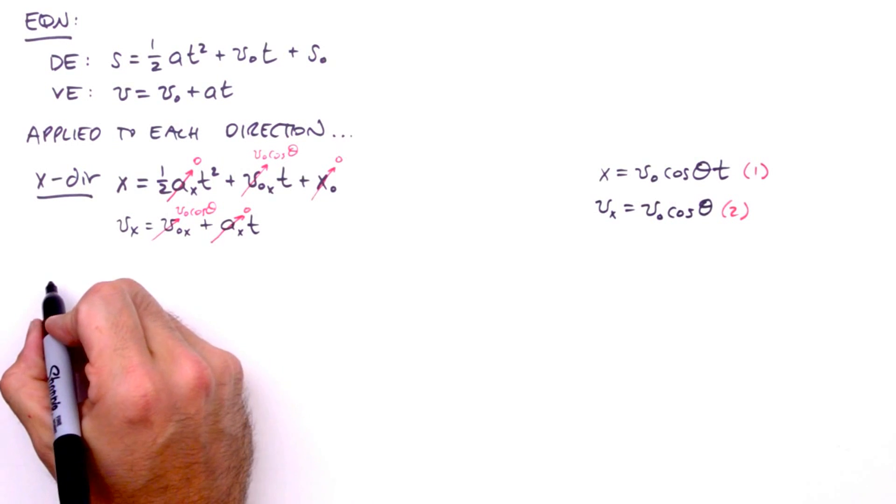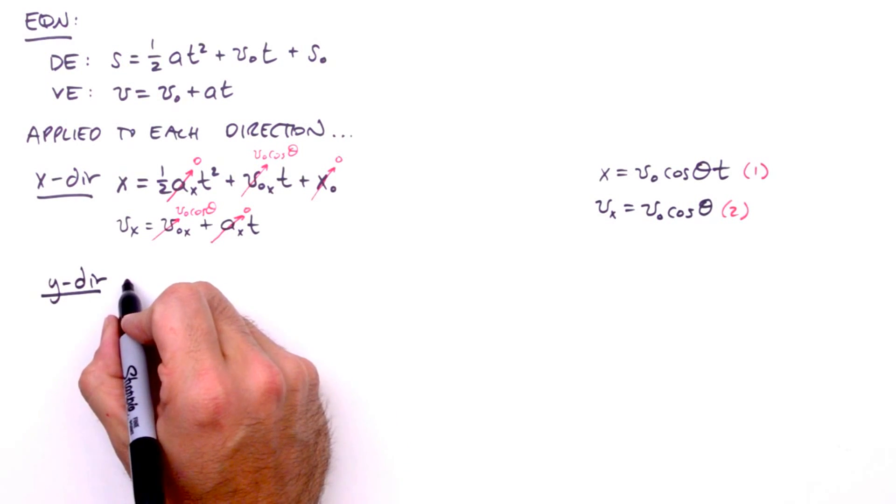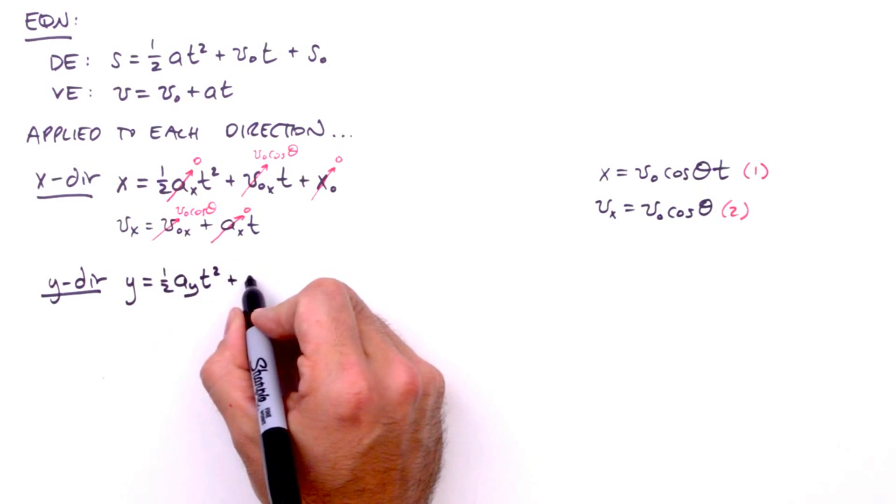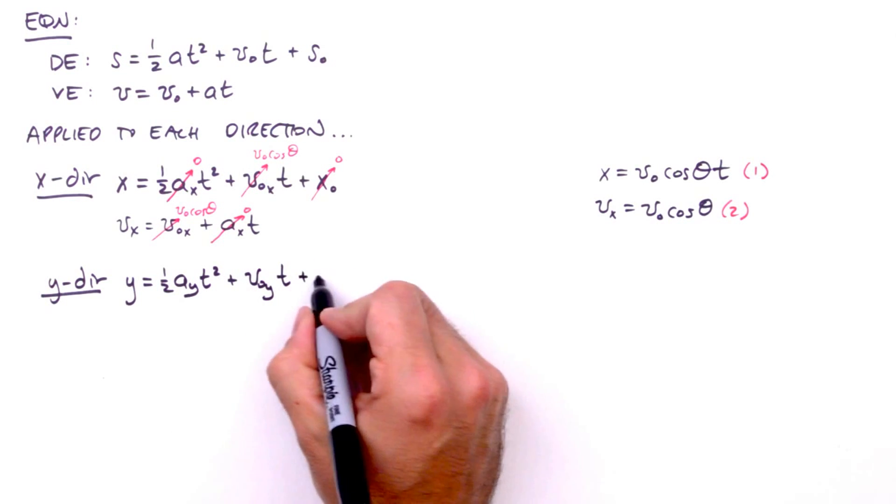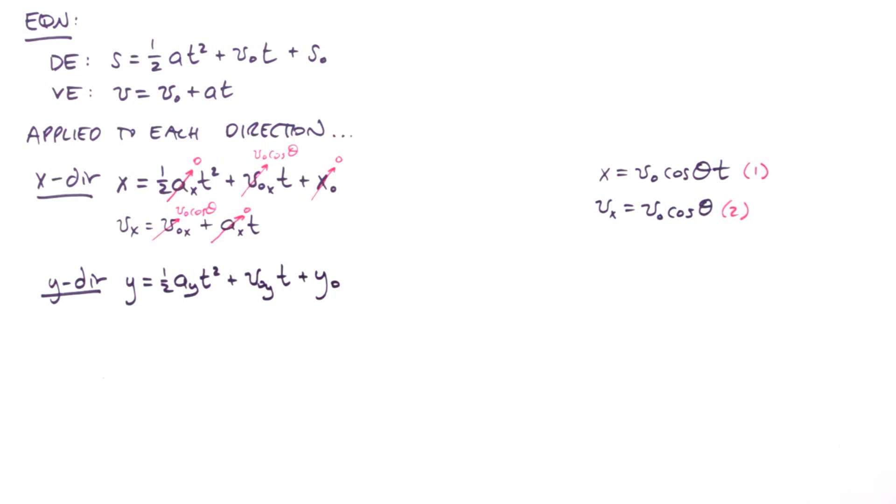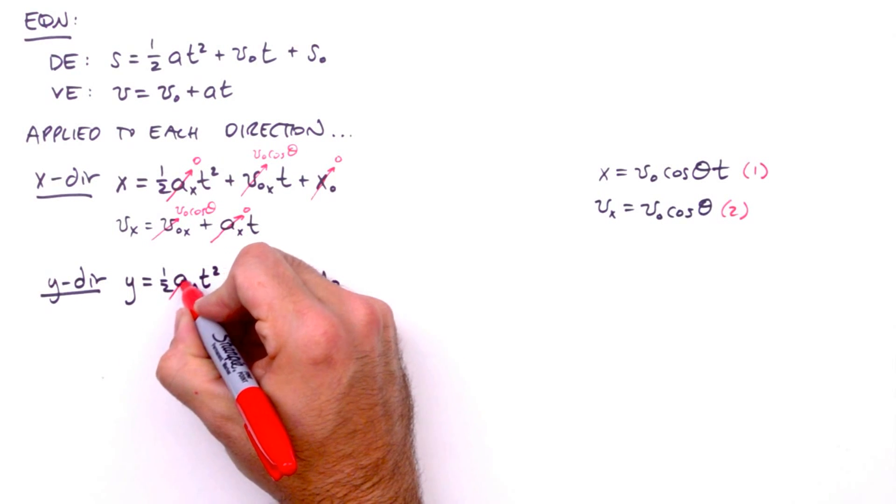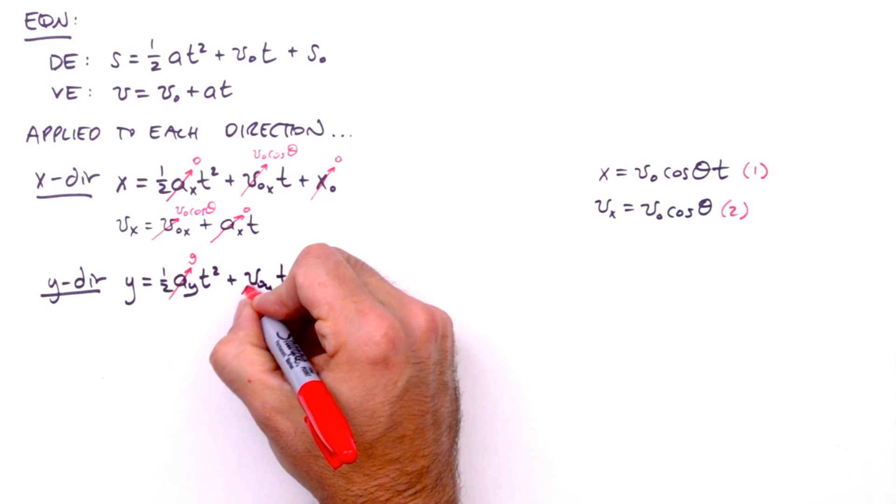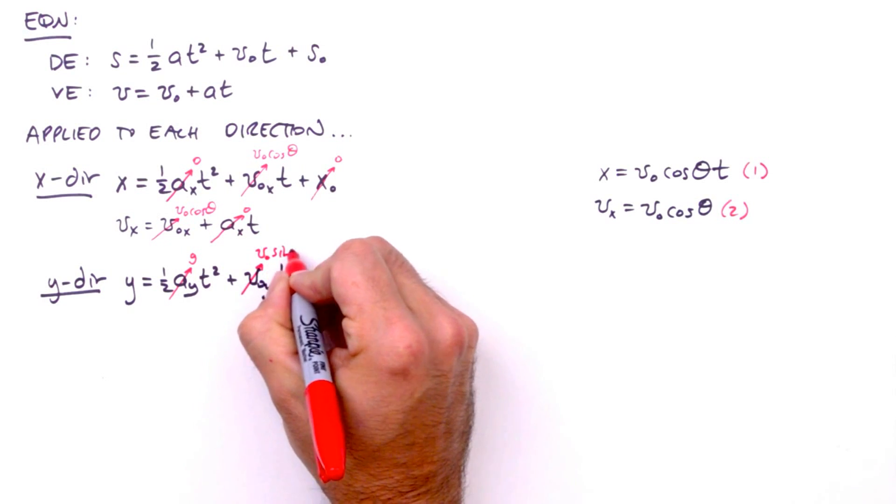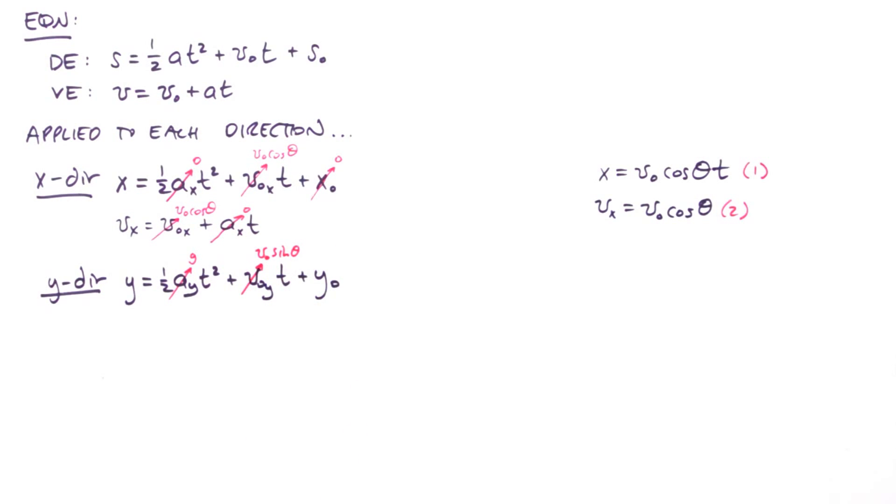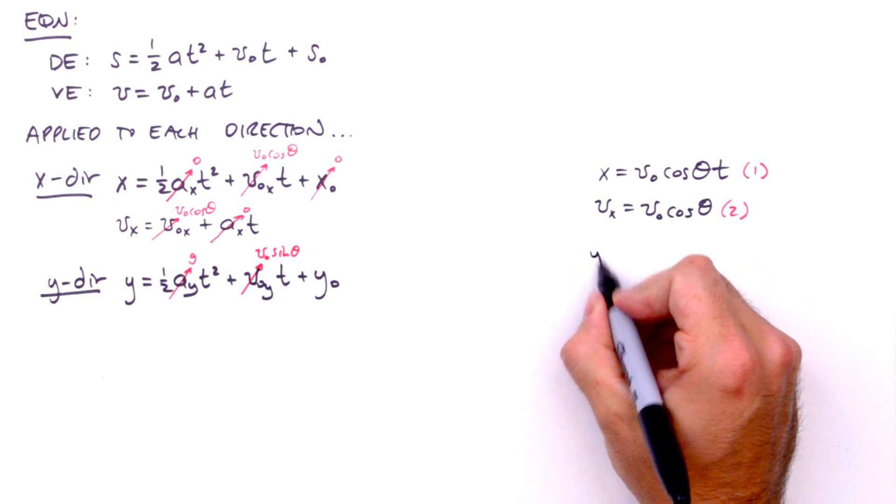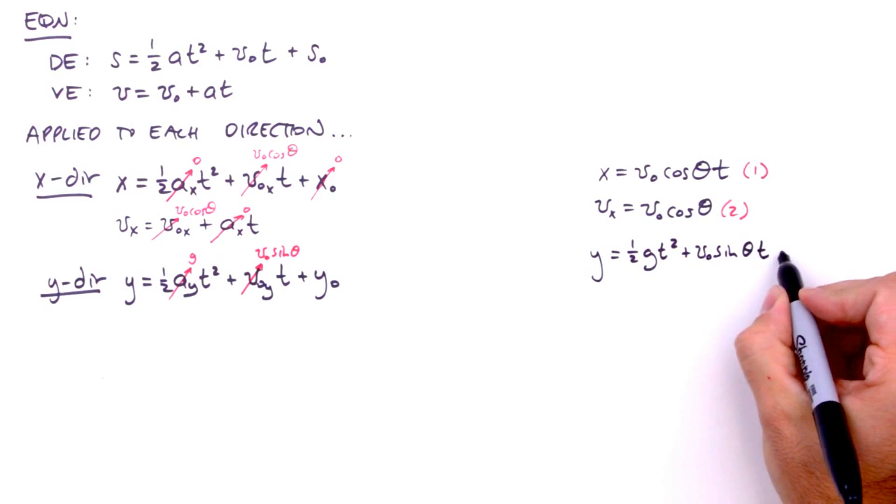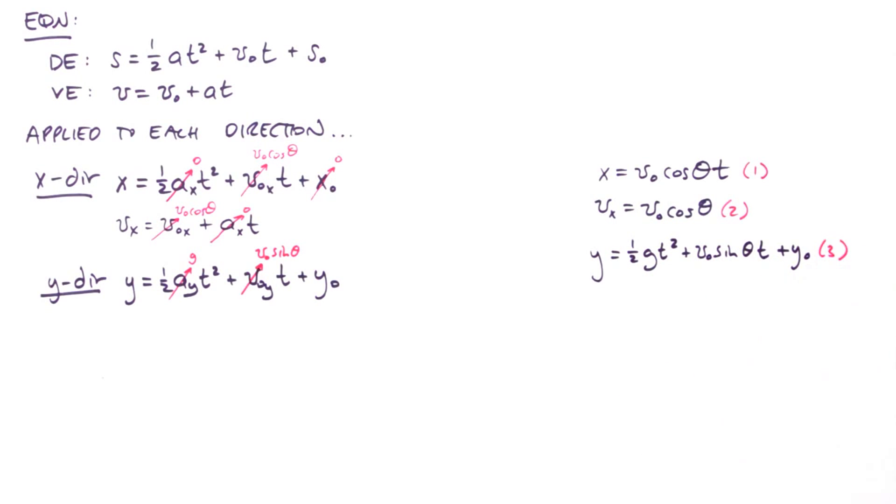Okay, so now we'll apply the kinematic equations to the y direction. The displacement equation becomes y equals one-half a sub y t squared plus v sub o sub y t plus y sub o. First, a sub y, the acceleration in the y direction, is the gravitational acceleration of a projectile, so we can set that to g. And we've defined v sub o sub y, the y component of our projectile's initial velocity, as v sub o sine theta. So, the displacement equation in the y direction simplifies to become y equals one-half g t squared plus v sub o sine theta t plus y sub o. Label that equation three and we're almost done.